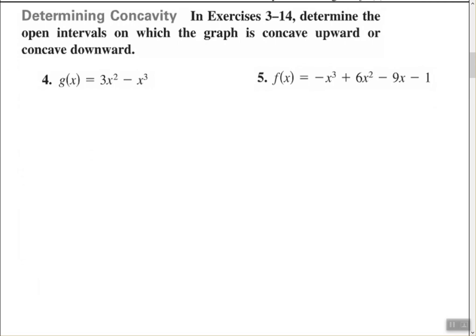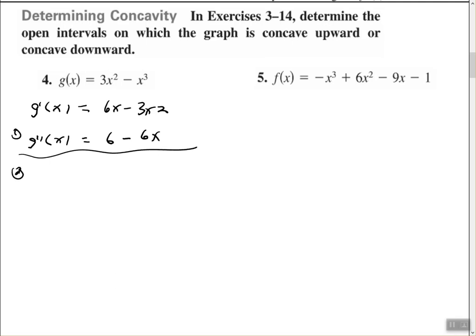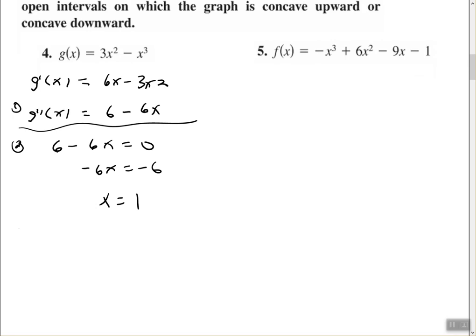Here we're going to determine the open intervals on which the graph is concave upward or concave downward. First, find the second derivative. The first derivative is 6x minus 3x squared, so the second derivative is 6 minus 6x. Set that equal to 0 and find where the second derivative equals 0. Subtracting 6 from both sides, the second derivative equals 0 at x equals 1.